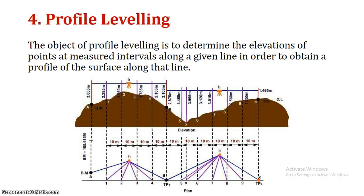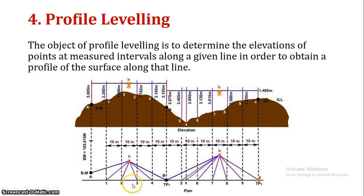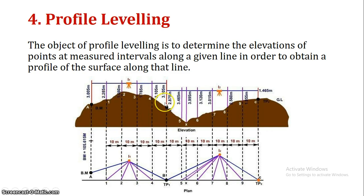Next is profile leveling. Along a line — for example, when constructing a road or railway — we place points at regular intervals, such as 1, 2, 3, 4. The instrument is set up and readings are taken at each point. Then we plot the ground profile, which is used for design and project planning.